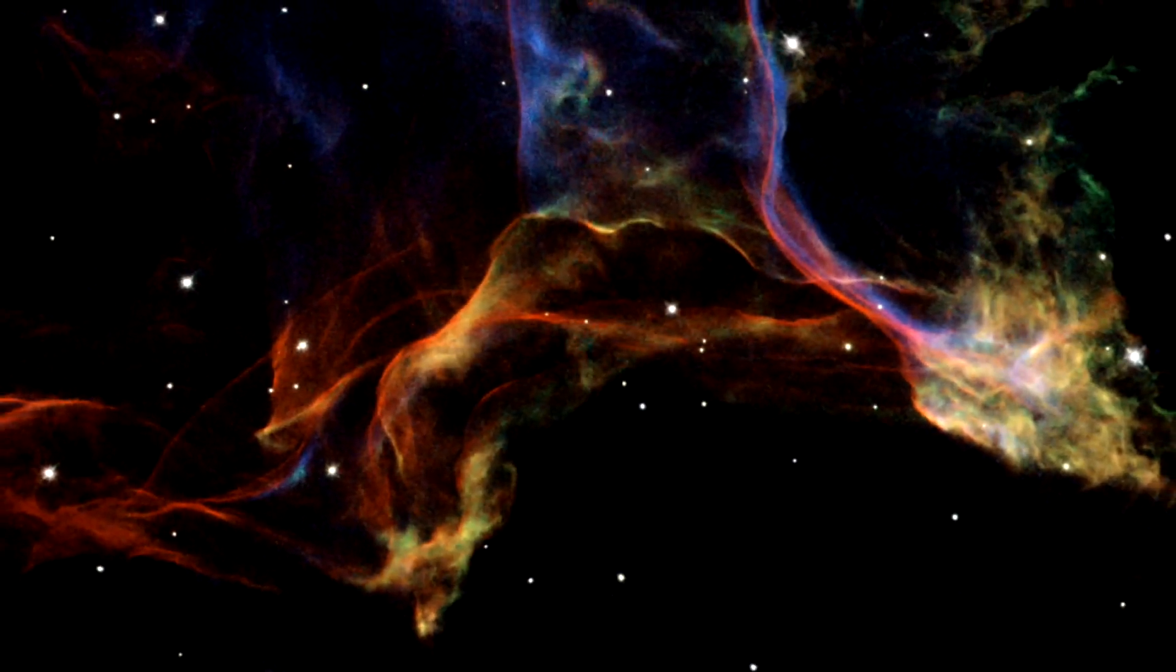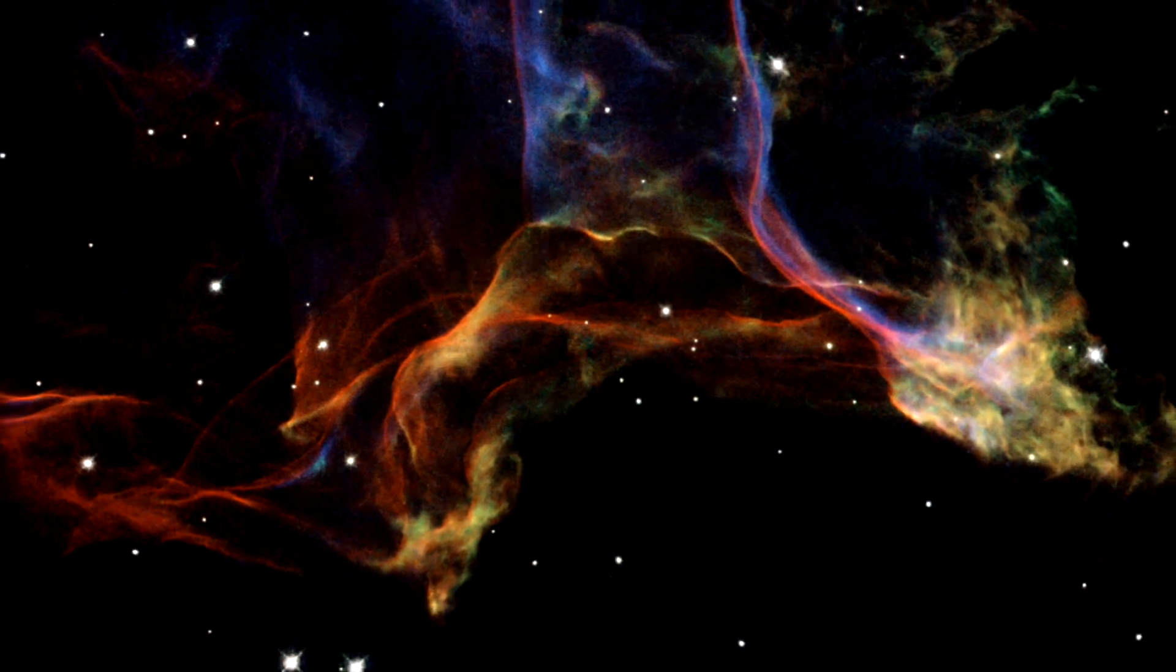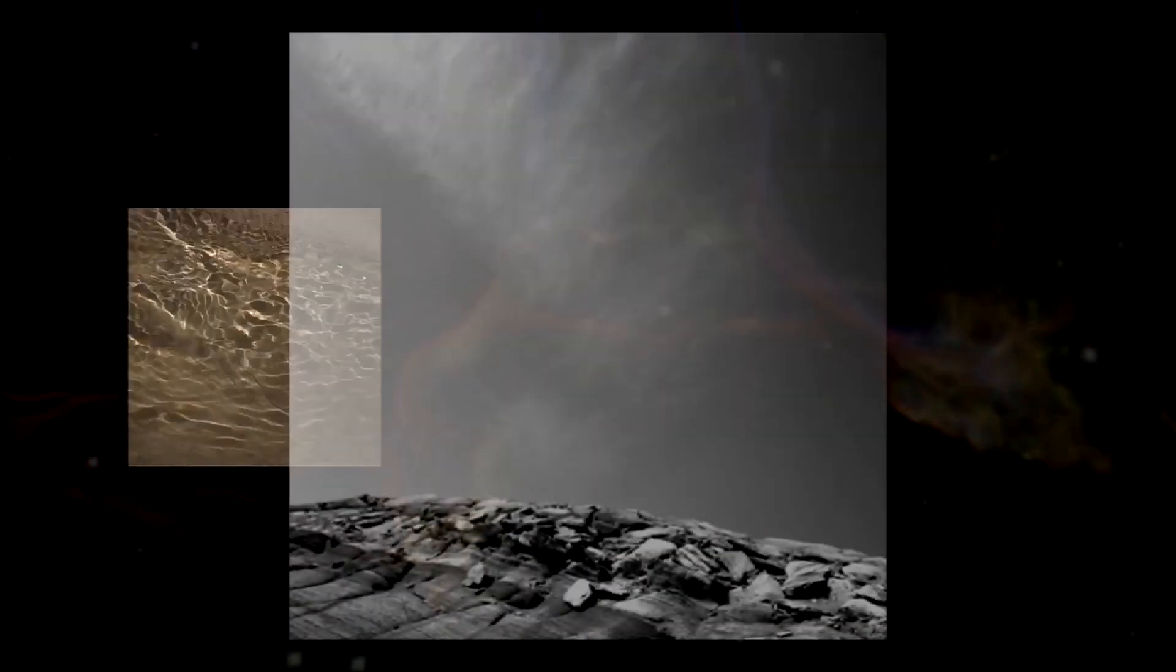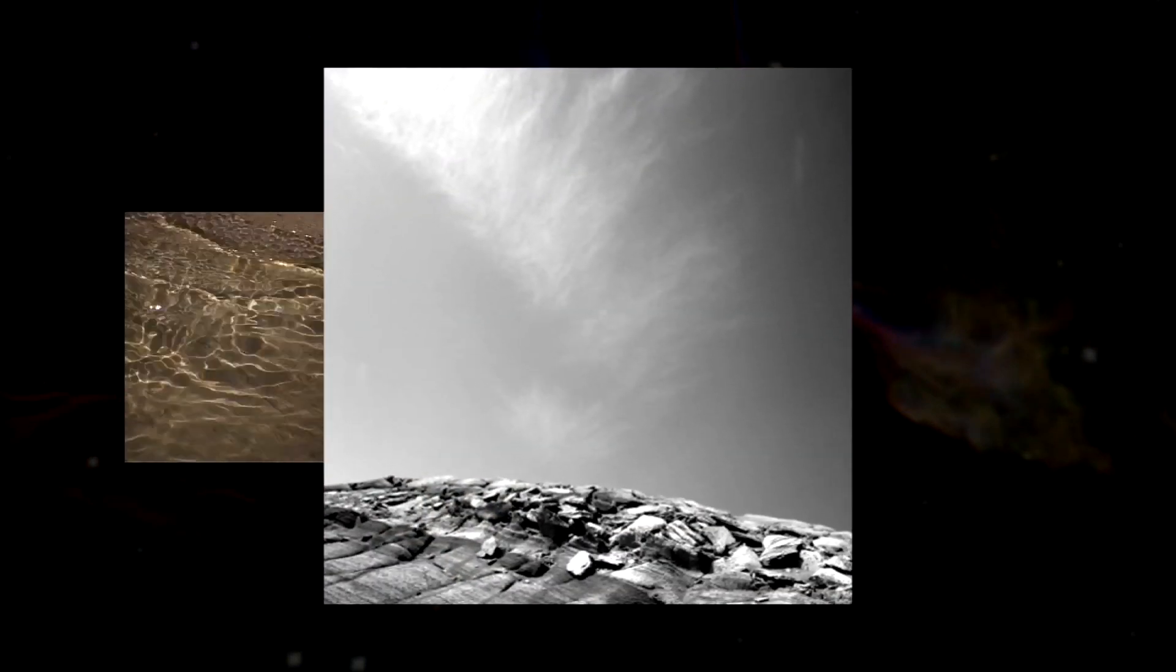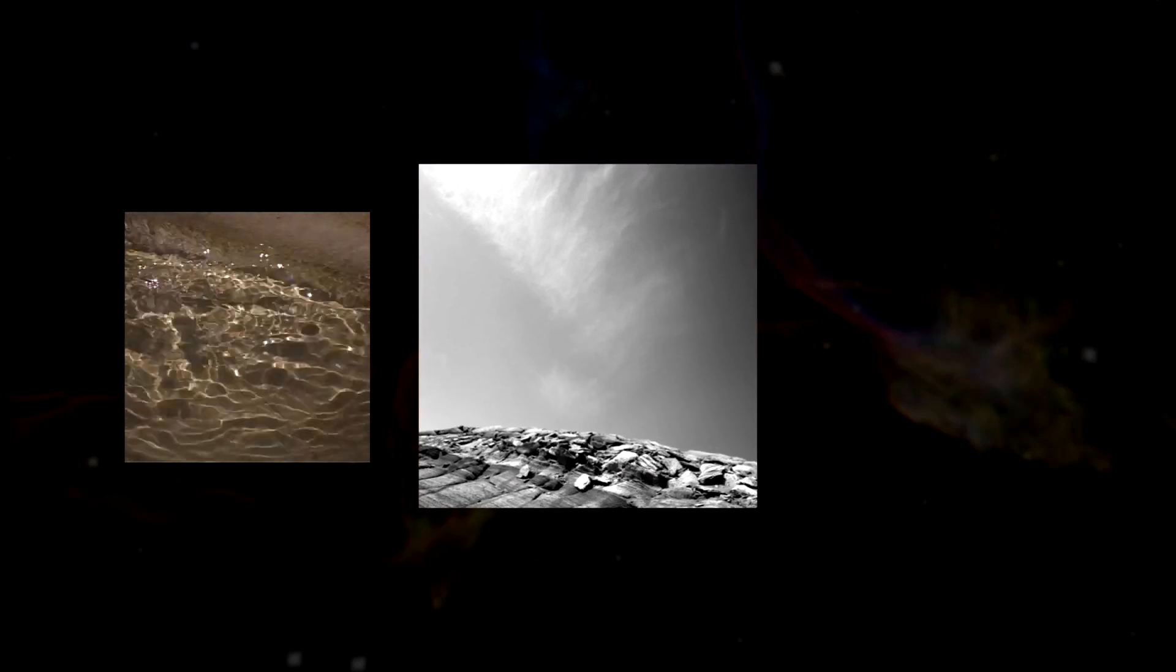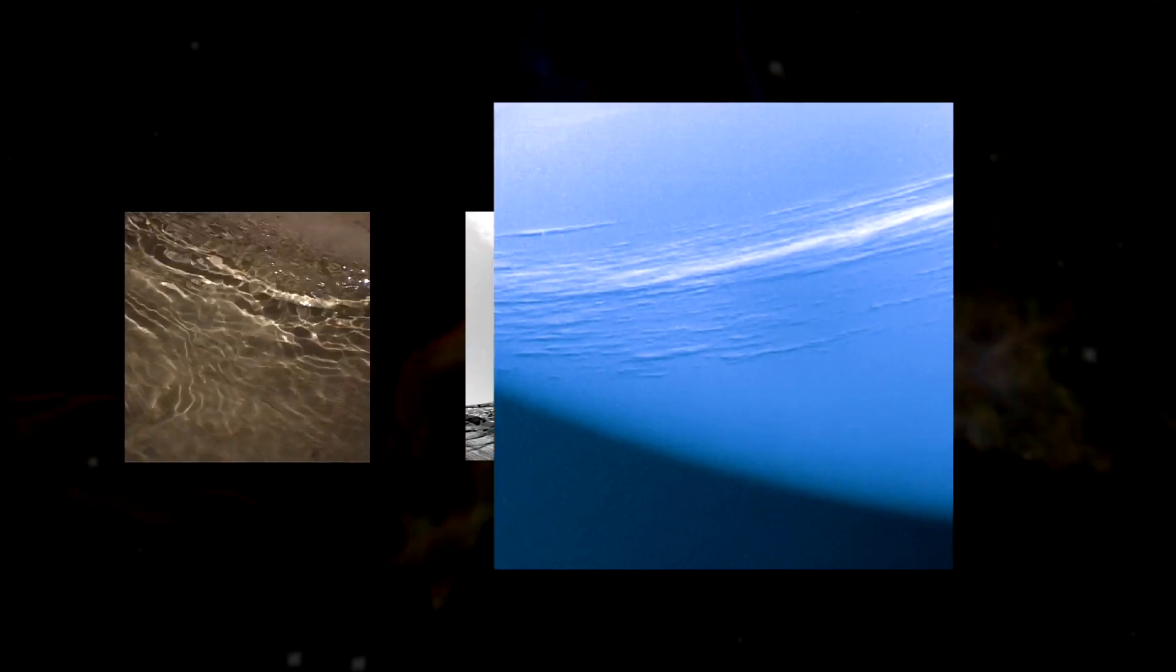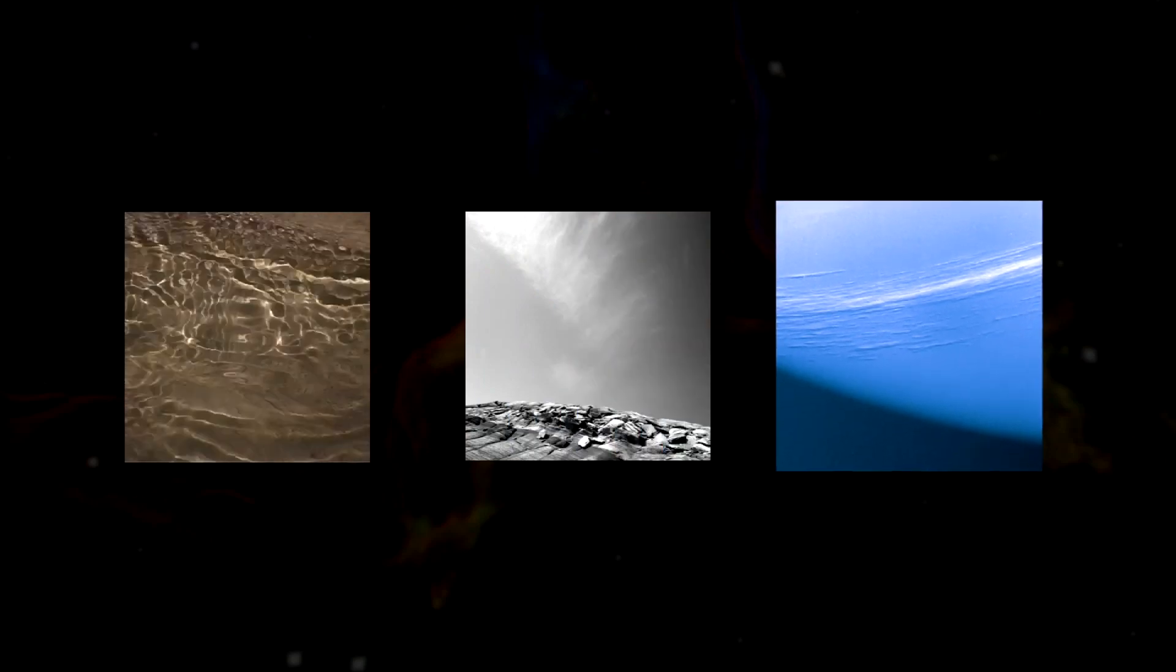The Hubble images of the Veil Nebula are striking examples of how processes that take place hundreds of light-years away can sometimes resemble effects we see around us in our daily lives. There are similarities with the patterns formed by the interplay of light and shadow on the bottom of a swimming pool, rising smoke, or wispy cirrus clouds.